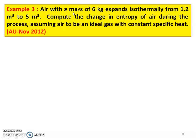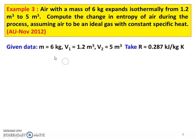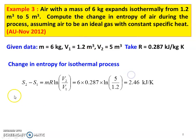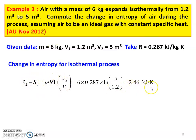Next problem — Example 3: Air with a mass of 6 kilogram expands isothermally from 1.2 m³ to 5 m³. Compute the change in entropy of air during this process, assuming air to be an ideal gas. Given: M equals 6 kg, V1 equals 1.2 m³, V2 equals 5 m³, R equals 0.287 kJ per kg Kelvin. For an isothermal process: S2 minus S1 equals M·R·ln(V2/V1), substituting 6 into 0.287 into ln(5/1.2), which equals 2.46 kilojoules per Kelvin.